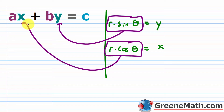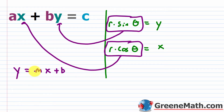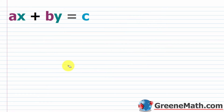Depending on your teacher, you may need to work with a generic form. We have the standard form ax + by = c, and also the slope-intercept form y = mx + b. You may need to convert generically so you can just plug in for a, b, and c, or for m and b. Let me solve this generically first, and then on the first example we'll plug it in.